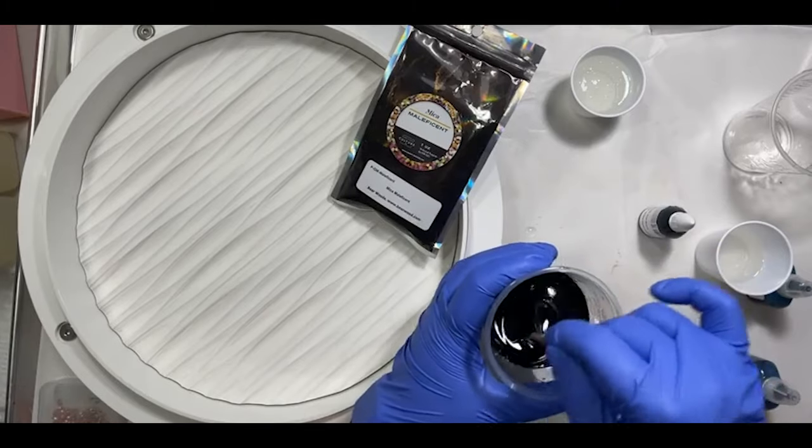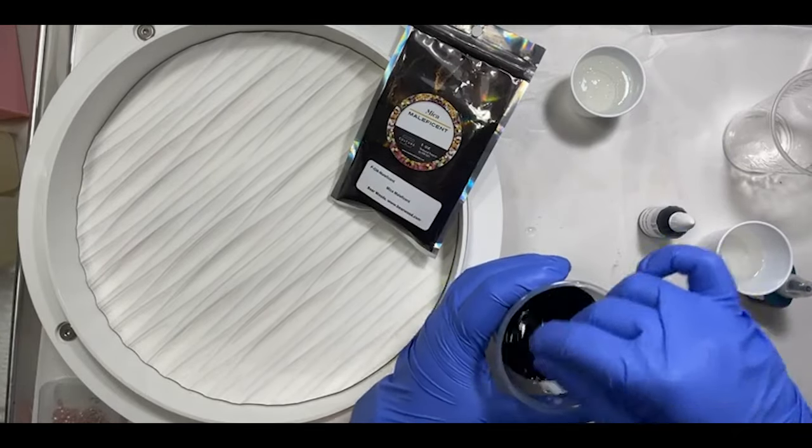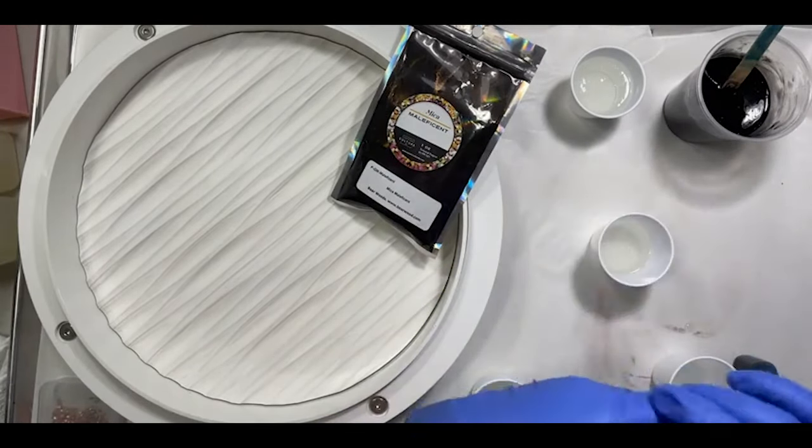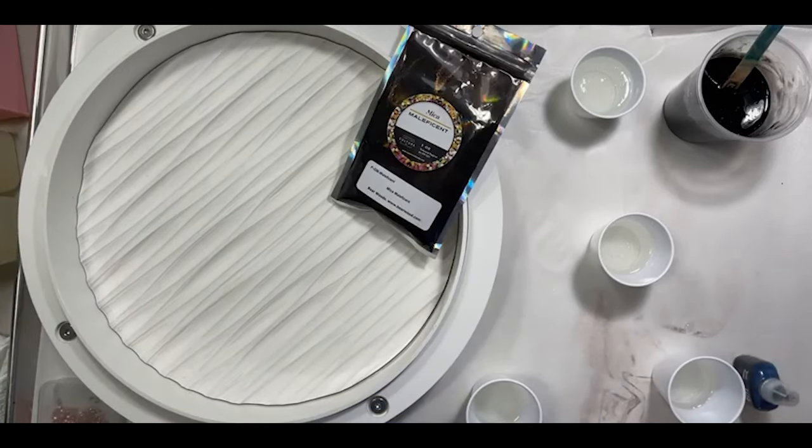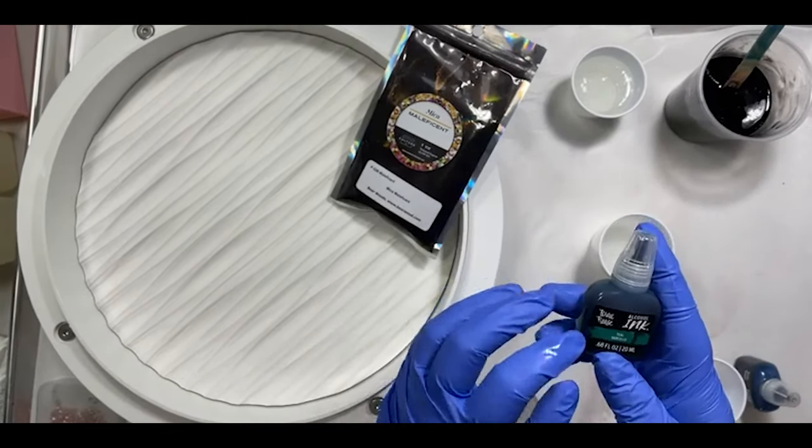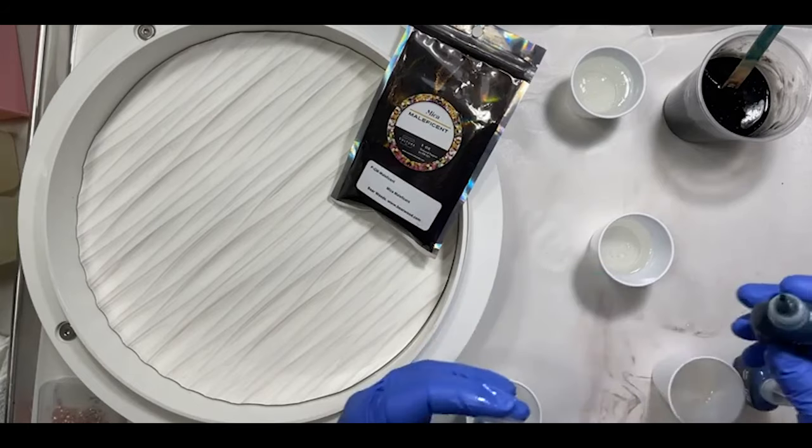I want fairly opaque - it doesn't have to be completely solid, but I want a nice rich black here. Got the black mixed up, now the alcohol inks.